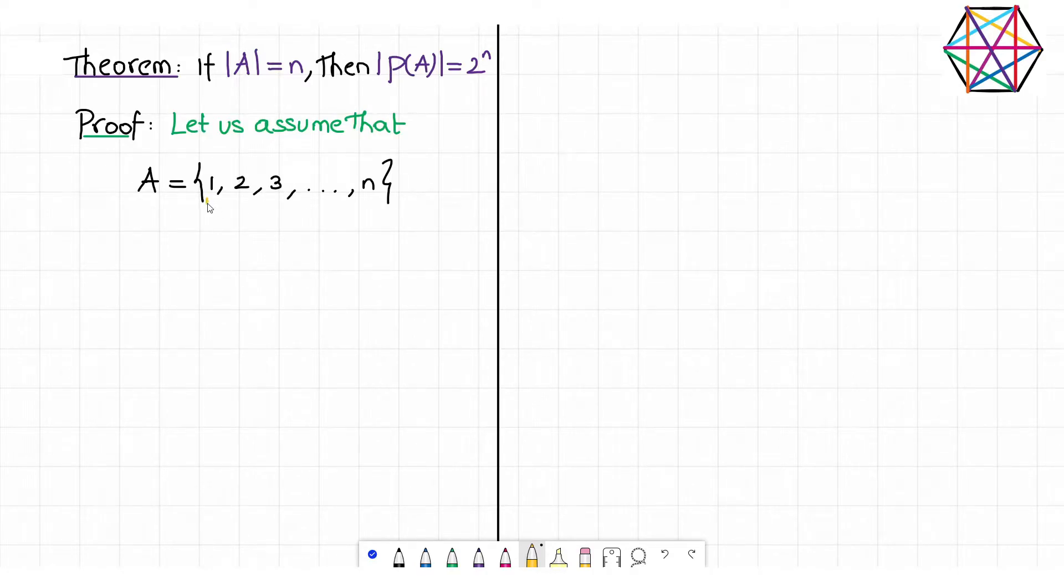We have n distinct objects. We label them 1, 2, 3, so on up to n. So we have n number of distinct objects in front of us. And I am asking you to find how many different ways you can choose, say, for instance, 4 objects.